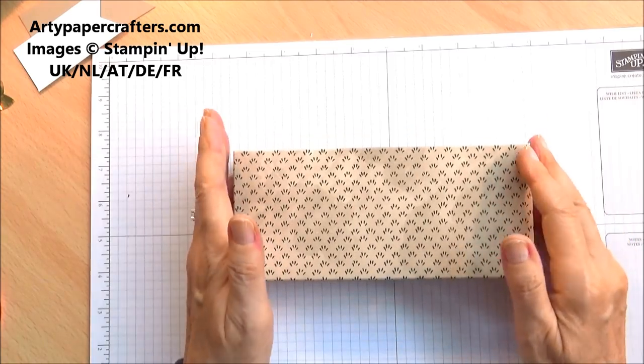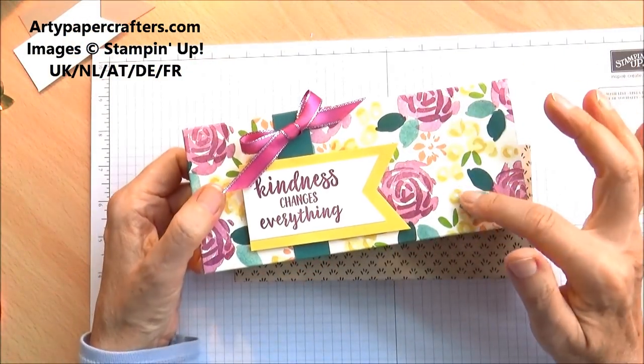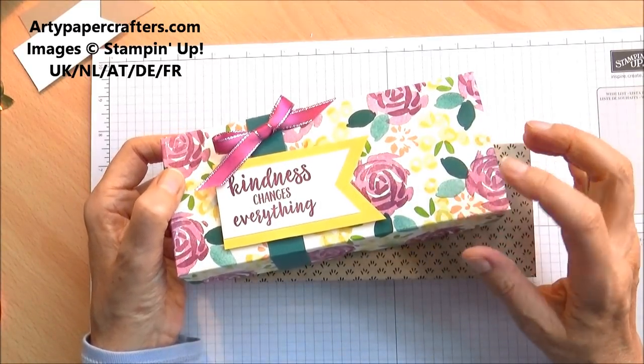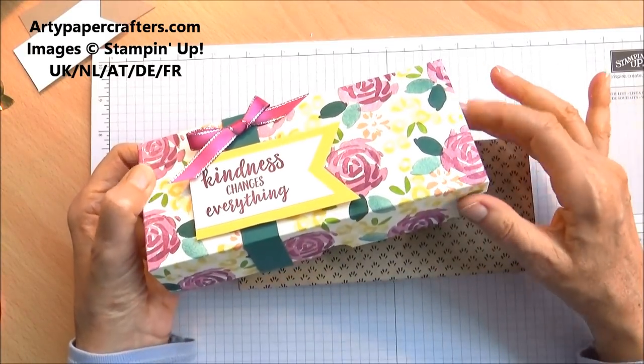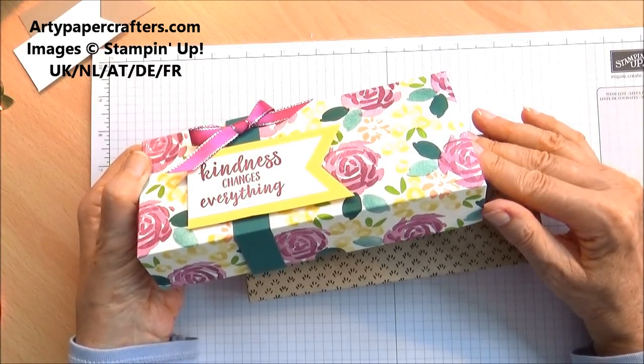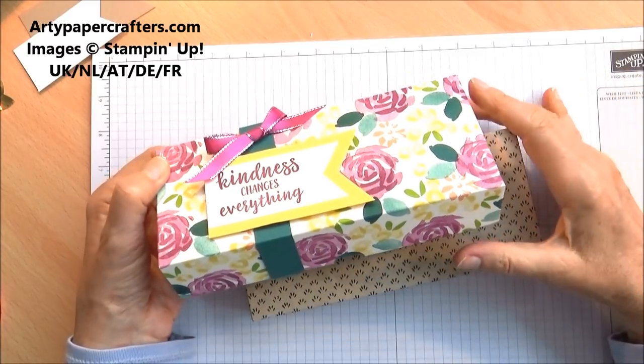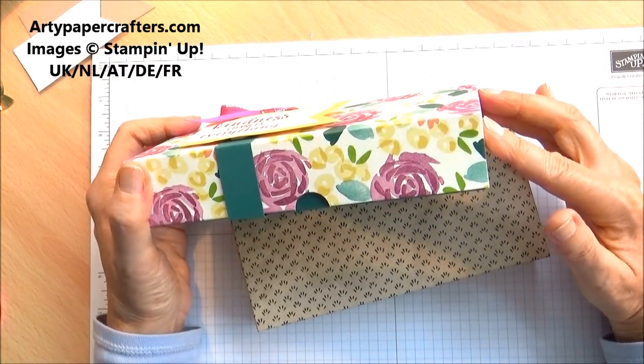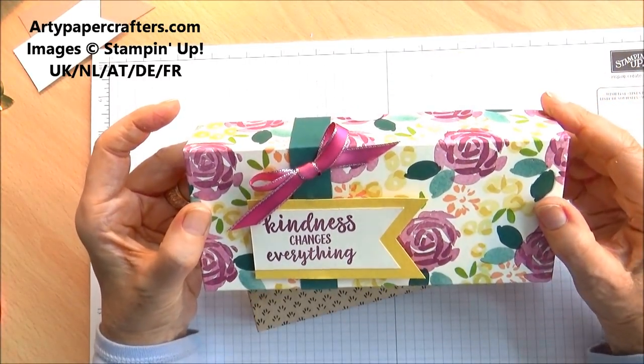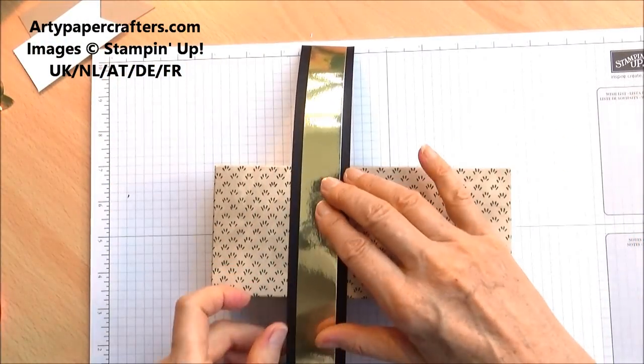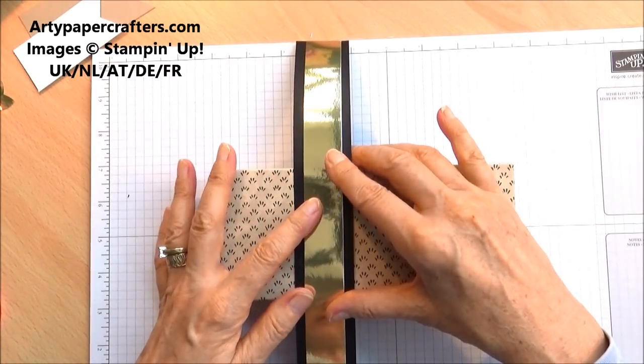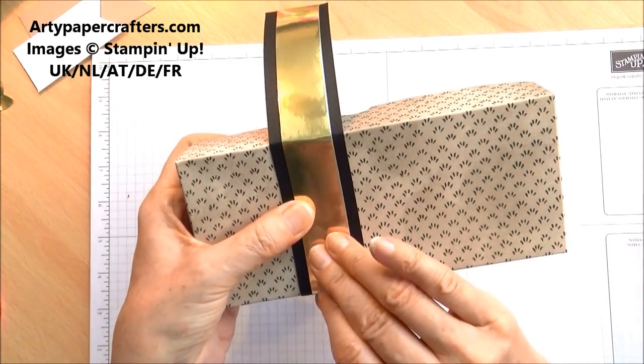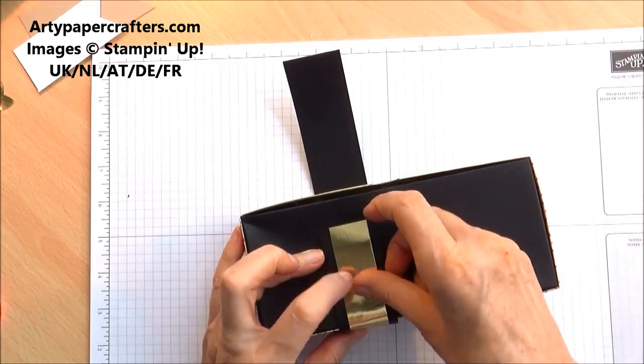Now we need to make our belly band. Just to mention that if you want to make your own DSP for your lid I have a video out and I will put a link to that on my blog. If you want to make this lid yourself and stamp your own DSP, go over to artypapercrafters.com onto my blog. We're making the belly band now so we put that on about here and what I did was I just tucked it round by hand and then tucked it round to this side.